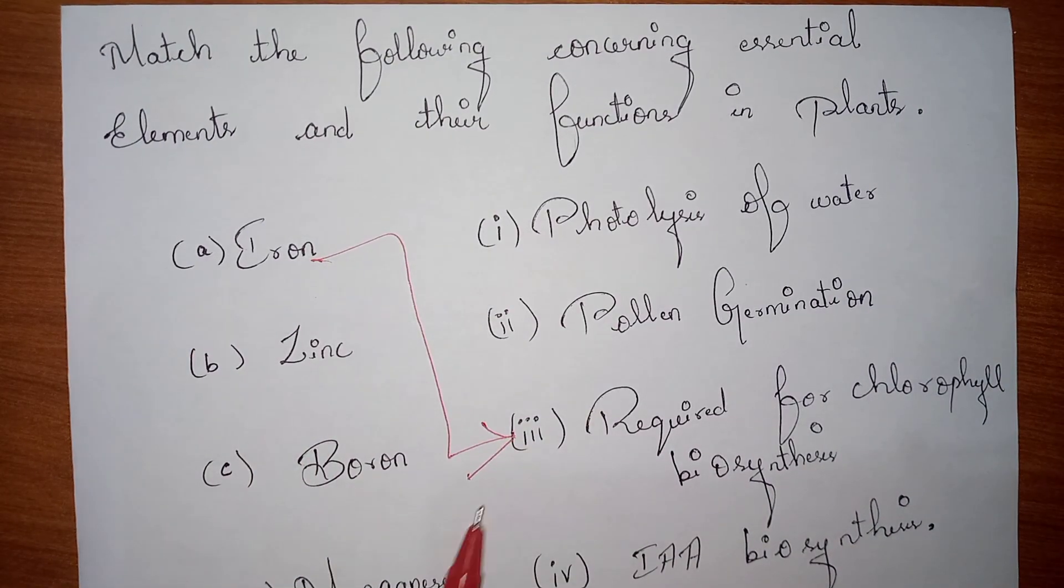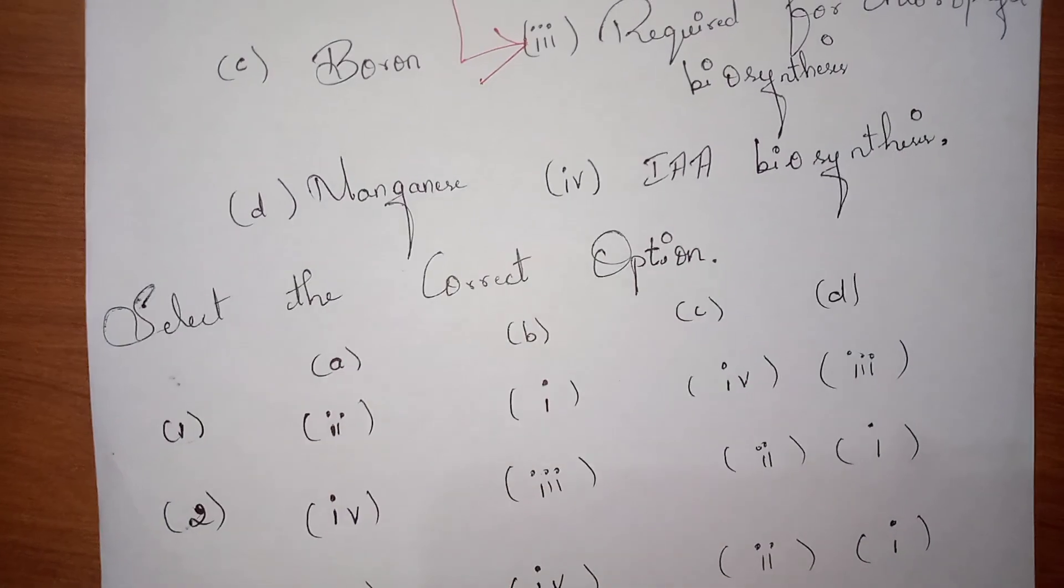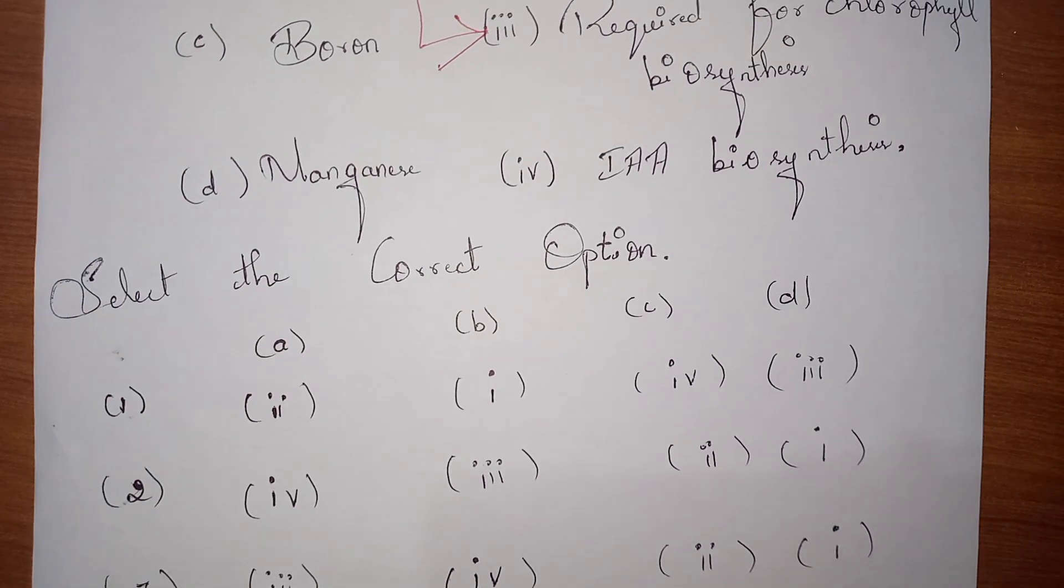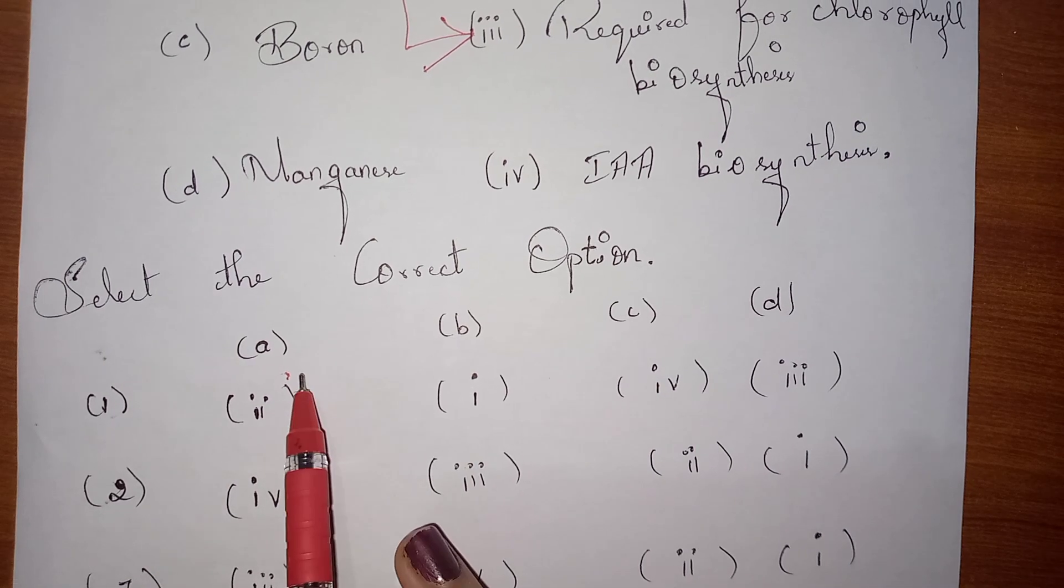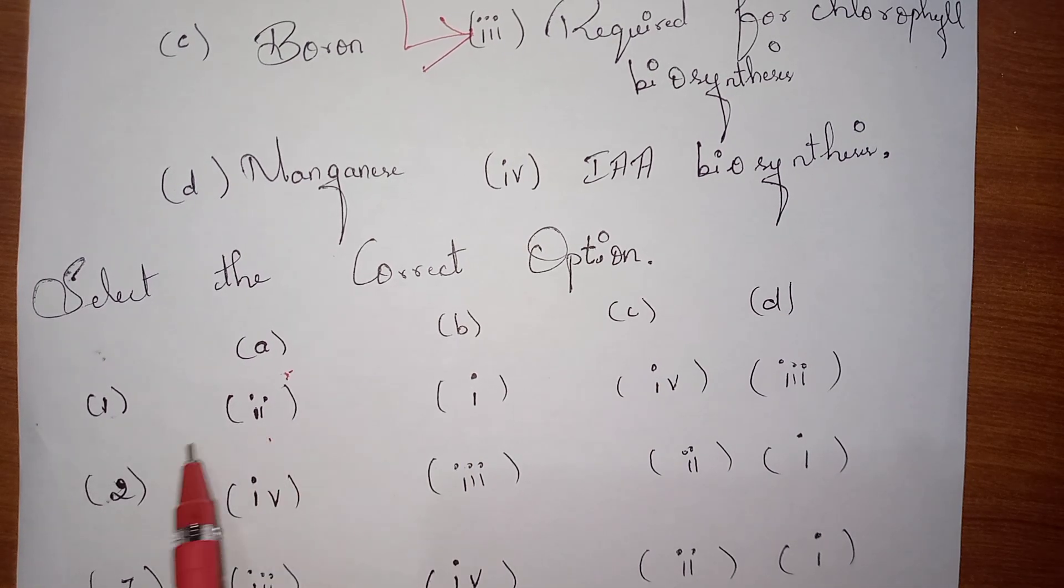Now they are given some options. We need to correctly see that for option A, it is option 3 is right, but here for option A they are given option 2, so this is wrong answer. Next, in our second option, for option A they are given 4, so this is also wrong.